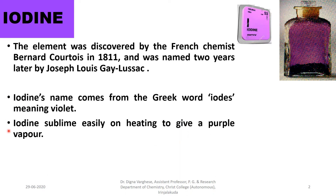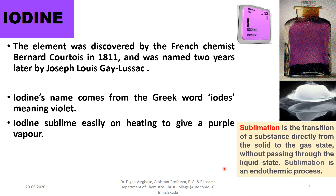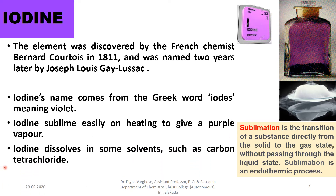Iodine sublimes easily on heating to give a purple vapour. Sublimation is the transition of a substance directly from the solid to the gas state without passing through the liquid state. Sublimation is an endothermic process. Iodine dissolves in some solvents such as carbon tetrachloride, and is only slightly soluble in water.